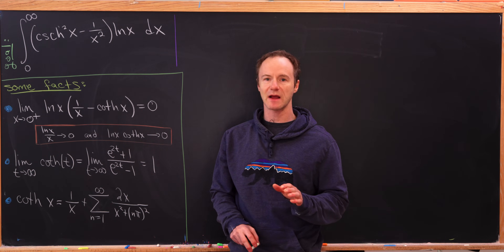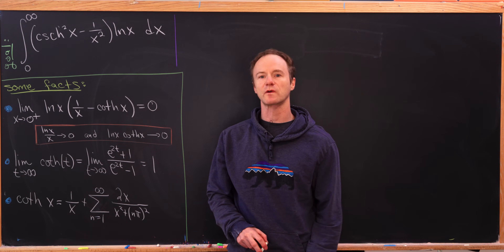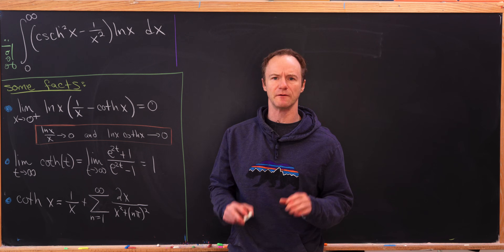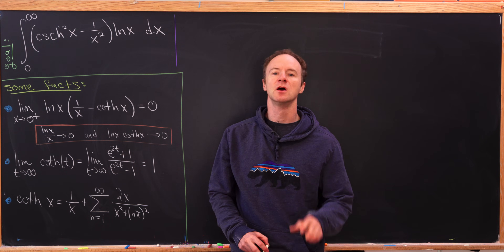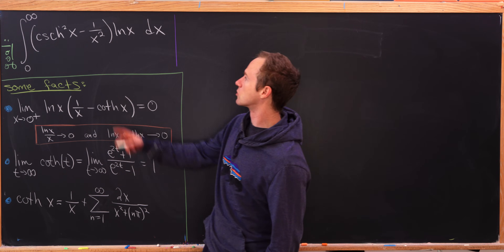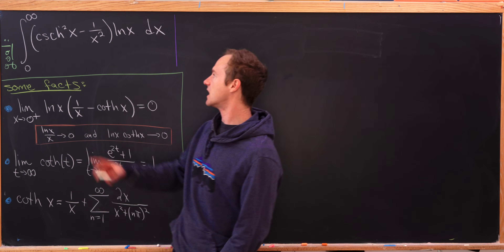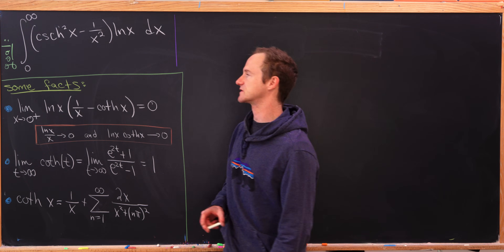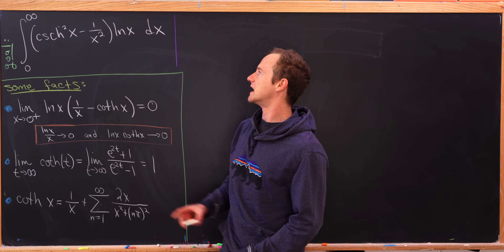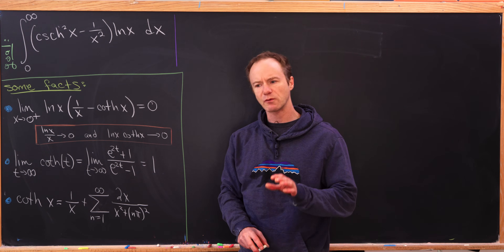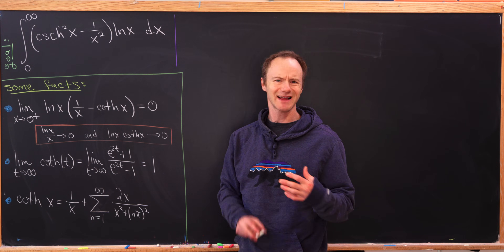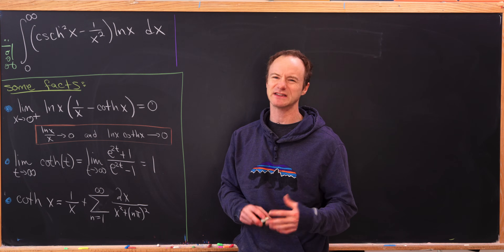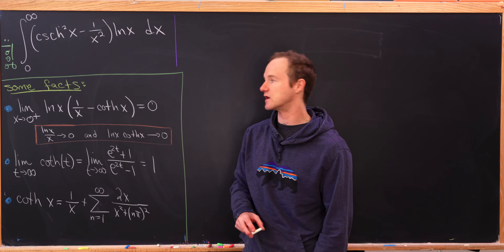Today we've got a really nice integral that involves some hyperbolic trig functions and a lot of really nice identities that are good to keep in mind. I think this is a good review for all of that type of stuff. Our final goal is the integral from 0 to infinity of the hyperbolic cosecant squared minus 1 over x squared, all times the natural log of x dx. We're going to evaluate this using some nice identities, some of which are pretty simple limits and one of which is a series expansion.